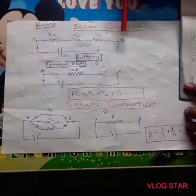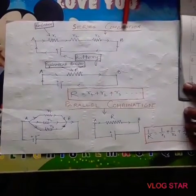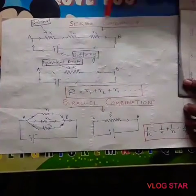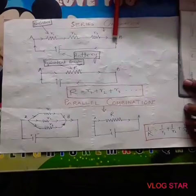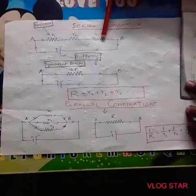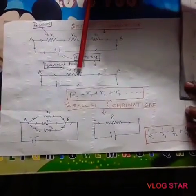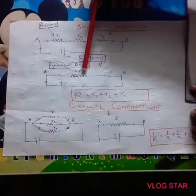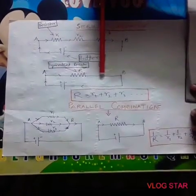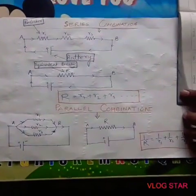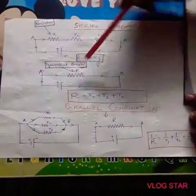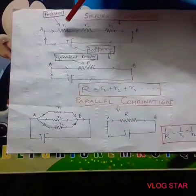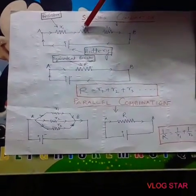Sometimes we replace these two or more resistors by an equal amount of resistor which maintains the same current and potential difference across the wire, called equivalent resistance. Here R is the equivalent resistor of R1, R2, and R3.